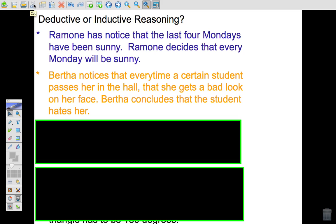It says Bertha notices that every time a certain student passes her in the hall, that she gets a bad look on her face. So Bertha notices that every time a certain student passes her in the hall, that student kind of looks at her and kind of gets a bad look on her face. Bertha concludes that the student hates her.